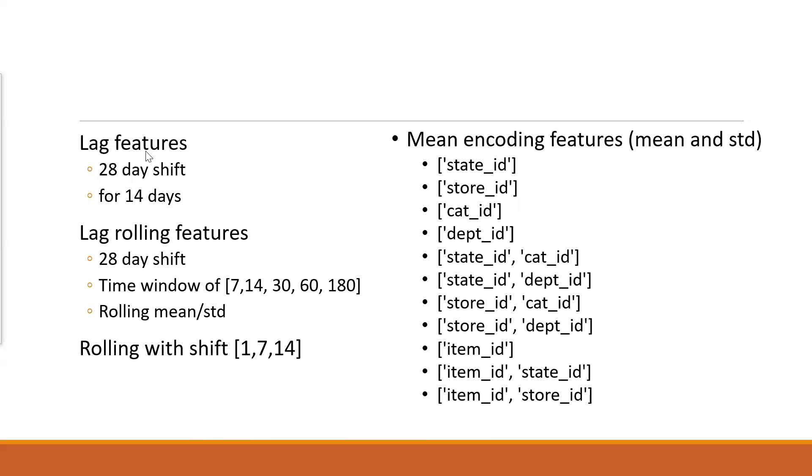And then, of course, just as the previous competition, they also generate lots of temporal features. They use lag features, rolling features. The lag features is just directly extract the sales from how many days ago. They first do a 28 day shift because I think it's going to forecast for one month. So they first do a shift of 28 days back. And then they extract what's the sales one day ago, two days ago, three days ago, 14 days ago. And then the rolling features with fixed time window of seven, a fixed window of 14. And then they do the rolling mean and STD. And also rolling with shift. Shift is like you move how many days back and then start the rolling process.